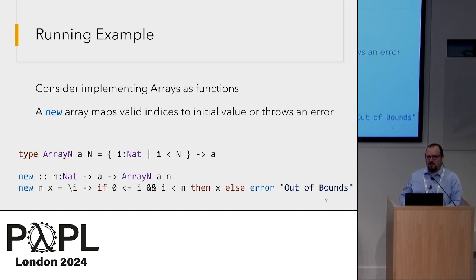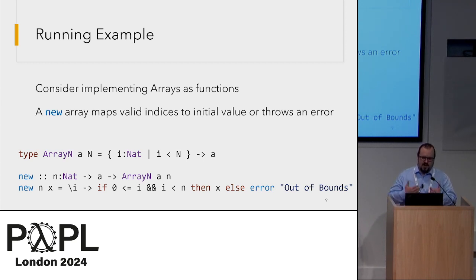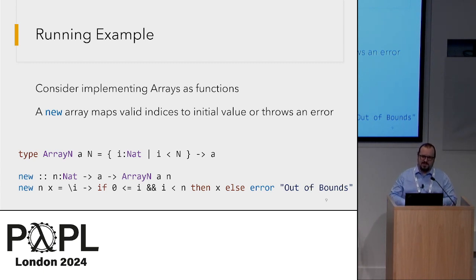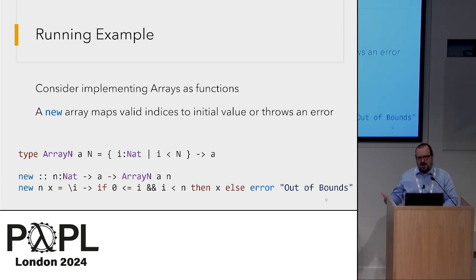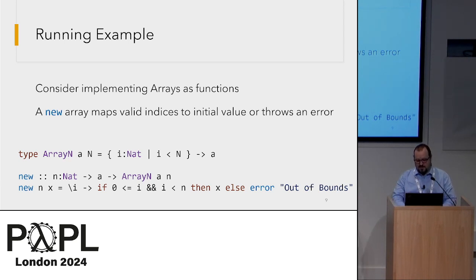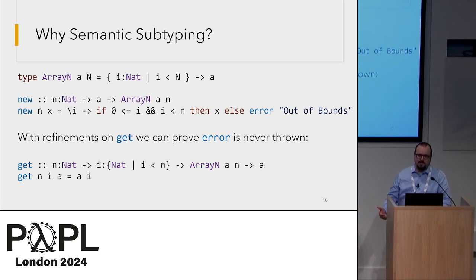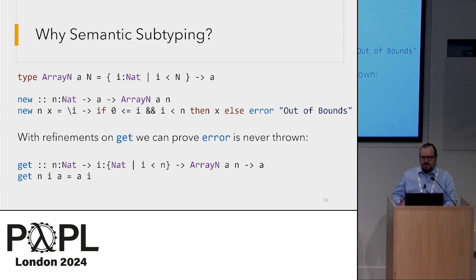I'll provide a running example through this talk: implementing arrays as functions. An array will simply be a function from a range of the natural numbers into whatever type is contained. The new function takes some number n — parameterizing how many indices are initially defined — and an initial value. It creates a function modeling an array with a bounds check; it either returns the default value or throws a runtime error if called out of bounds. The advantage of refinement type systems is that we can write a refinement type for the get function that accesses array elements, and prove at compile time that the runtime out-of-bounds error is never thrown.